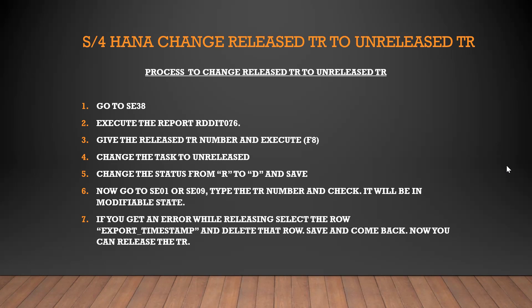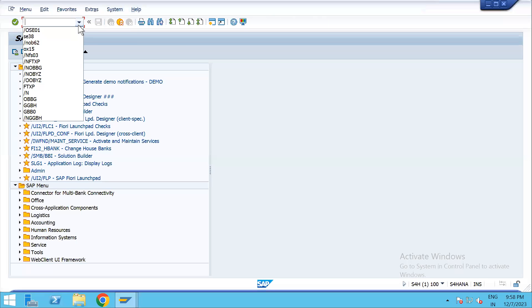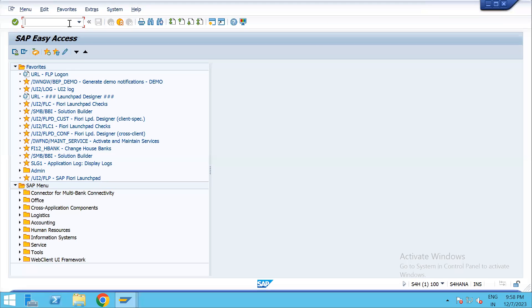Sometimes after changing it to modifiable state, you do changes and save the object in your TR, but when you try to release you might get an error. In that case, double-click the TR, go into its properties, find the attribute column, select the row with the export timestamp, delete that row, then save and come back. Then you can release the TR again.